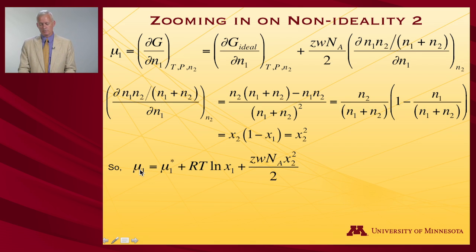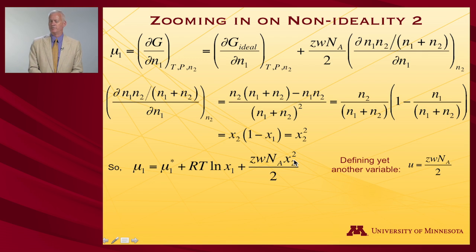So that means my chemical potential is equal to the ideal chemical potential, μ₁*, plus RT log mole fraction, plus this last term. So these were the constants: z, w, Avogadro's number over 2, times x₂ squared. Let me define yet another variable. I did tell you to hold on at the beginning of this lecture. Let that variable be just these constants, just to make life a little bit easier. So z, w, Avogadro's number over 2, captured in there is all the information about how many neighbors do my molecules have, how different are the interactions between unlike molecules compared to like molecules. I'm just going to bury that all in one variable, u.